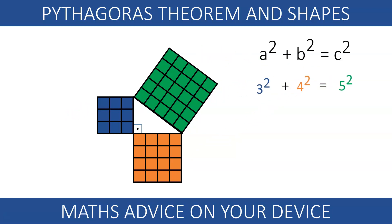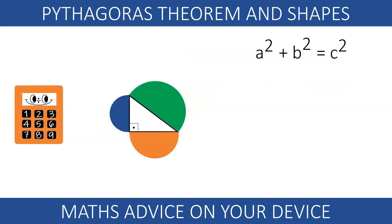In other words, if we add the blue and the orange areas, we will obtain the green area. We already saw this in our previous video, Pythagoras Explained.